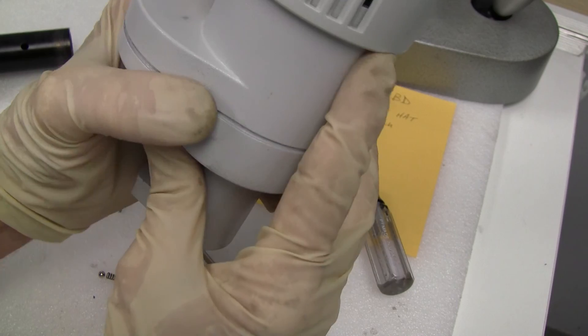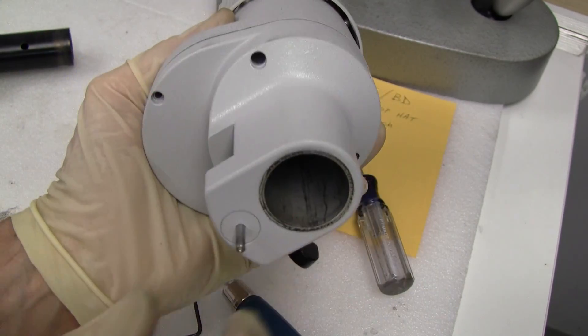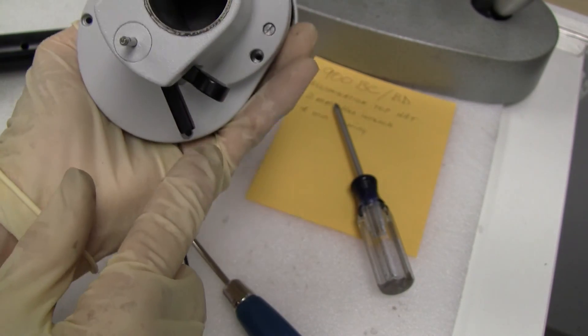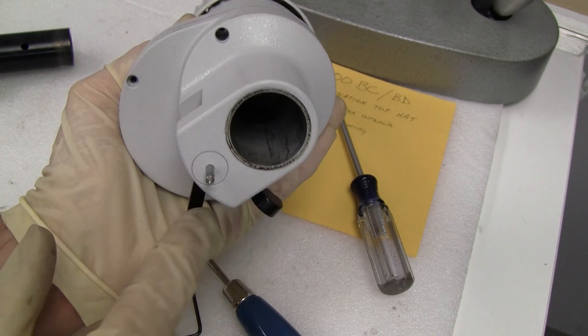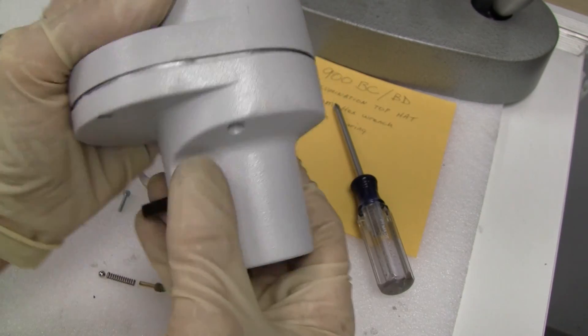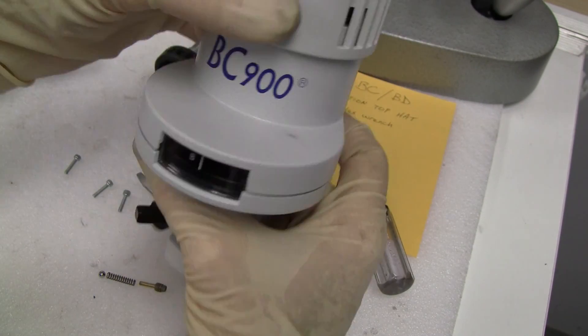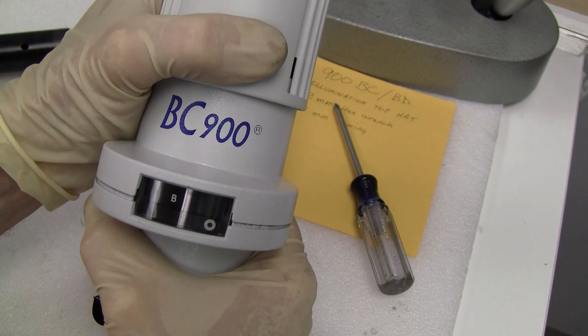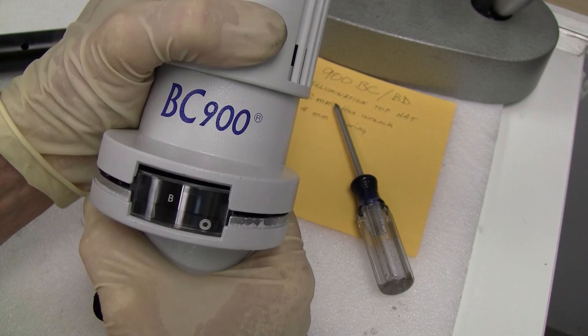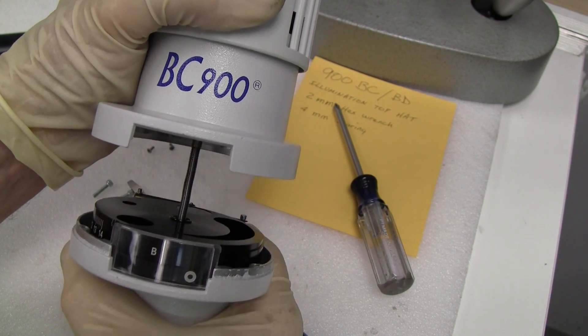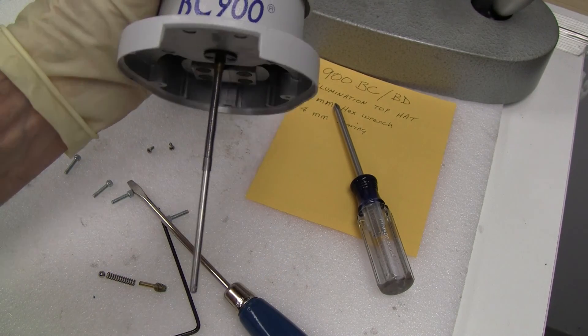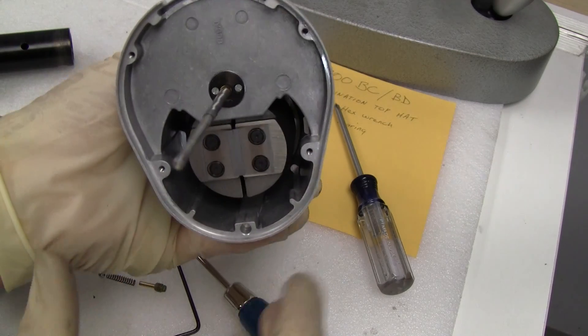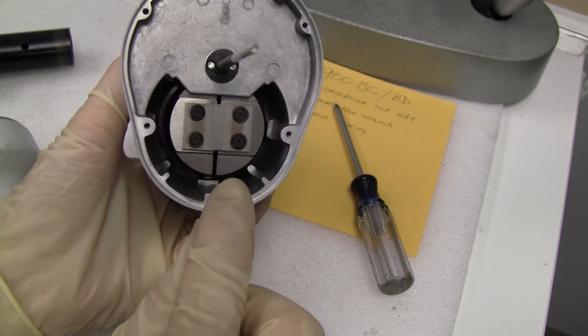Once you take that off and you've taken off your four screws, you can take your top hat off slowly which exposes your slits.